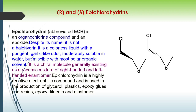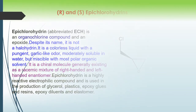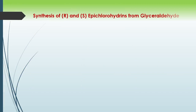Hello friends, welcome back. In the previous video we saw the retrosynthesis and synthesis for R and S epichlorohydrin using the chiral precursor D-mannose. In this video we are going to synthesize R and S epichlorohydrin, but here the starting material is different — we use the D-glyceraldehyde molecule as a chiral precursor.